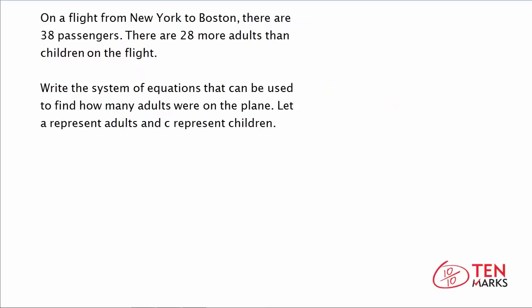Let's try another problem together. On a flight from New York to Boston, there are 38 passengers. There are 28 more adults than children on the flight. Write the system of equations that can be used to find how many adults were on the plane. Let A represent adults and C represent children. We know there are 38 passengers total — a mix of adults and children — so our first equation is A plus C equals 38.